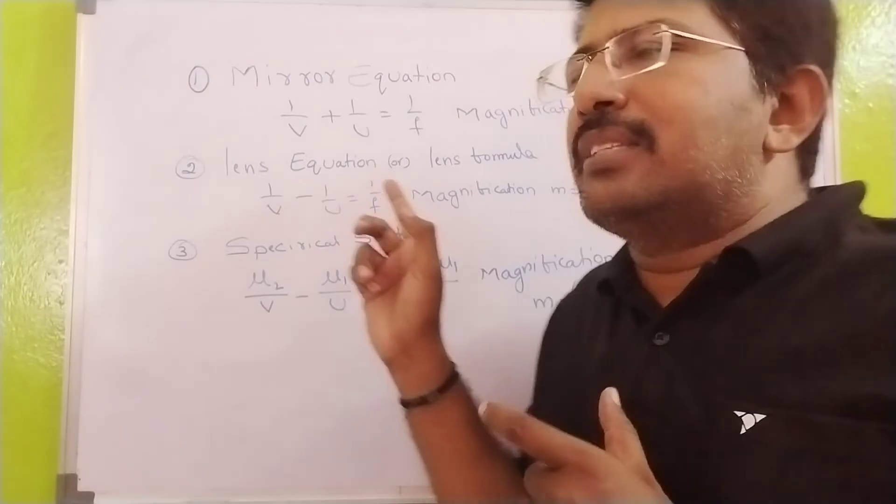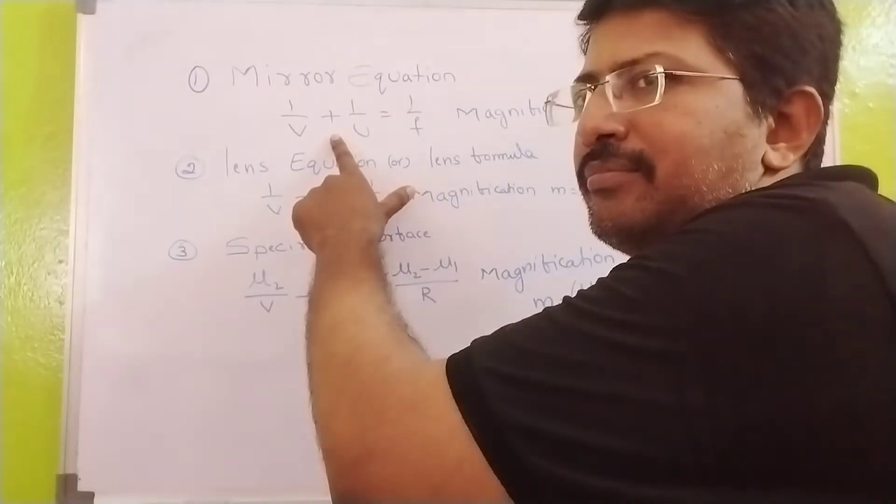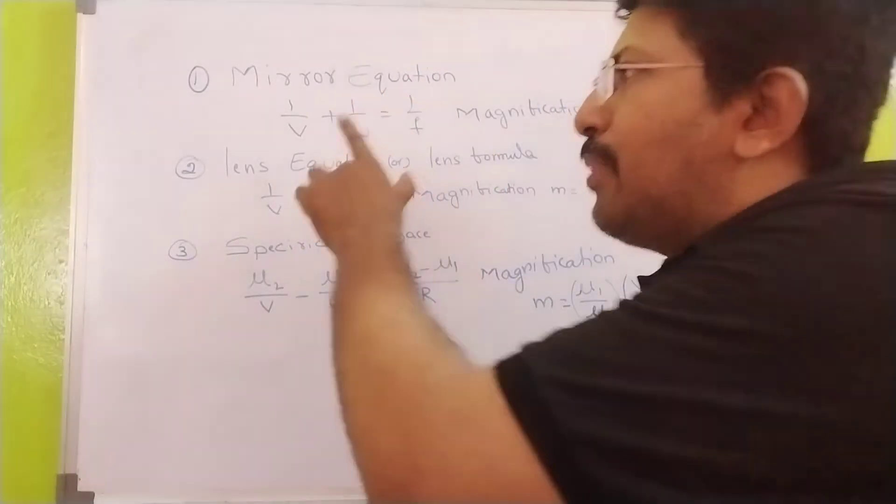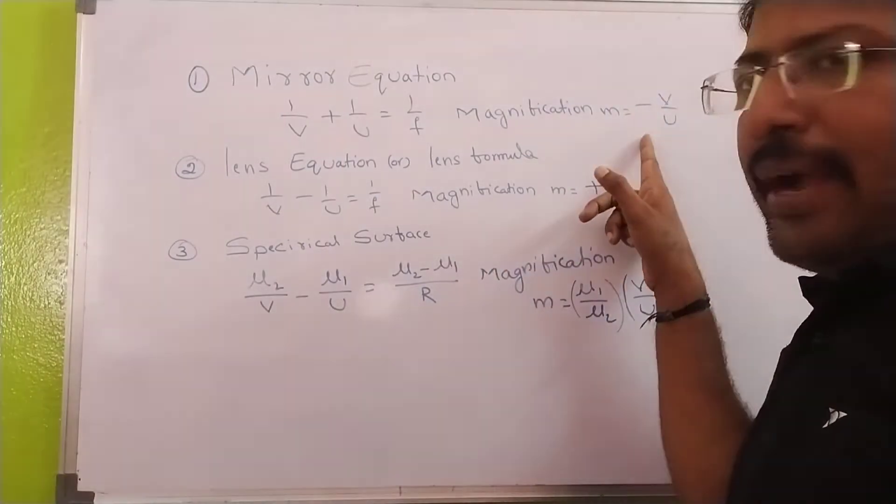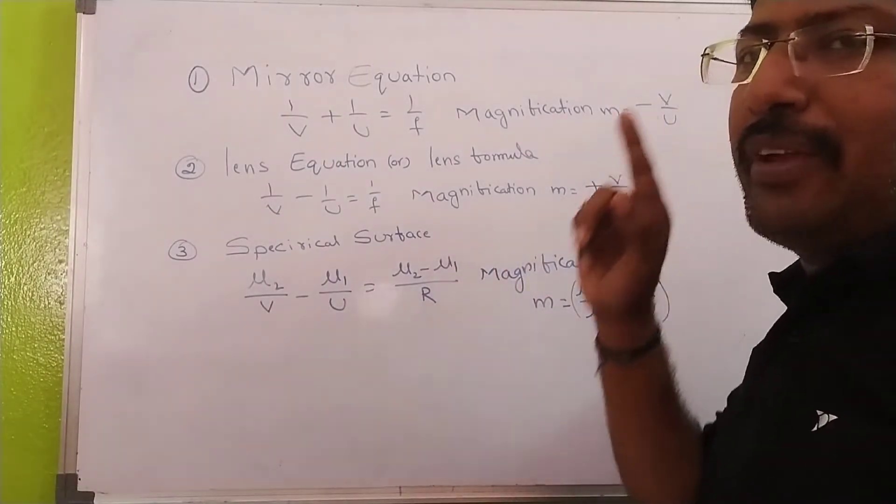In this equation plus is given, so if you have plus here, magnification you will get minus, minus magnification.